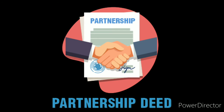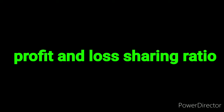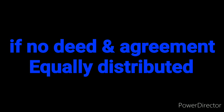Regarding provisions: the first is profit sharing ratio. If it is mentioned in the deed — say 2:3:4 or 1:2:3 — profit will be split and given to the partners as per that agreed ratio. If the deed is silent about the profit and loss sharing ratio, then irrespective of their capital contribution, the profit will be split equally among all partners. Losses are also distributed equally if the deed is silent.